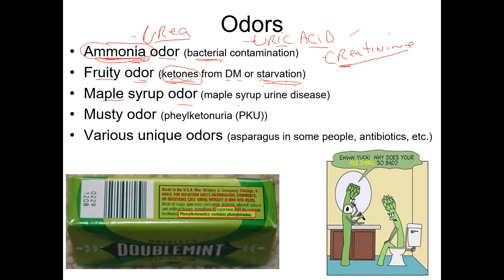Maple syrup odor indicates maple syrup disease, a genetic metabolic disorder. Phenylketonuria — PKU — is when you lack one of the enzymes in the cascade that breaks down phenylalanine, an amino acid that if not broken down causes problems in your urine, giving it a musty odor. Asparagus odor is actually a genetic trait — not everybody has that smell in their urine from eating asparagus. So unique odors can relate to medications or certain genetic conditions.